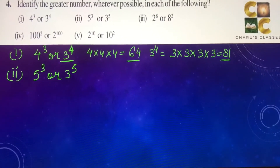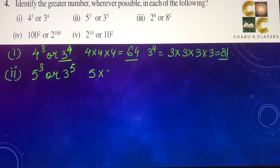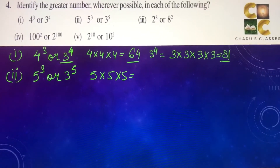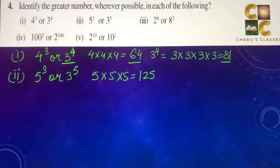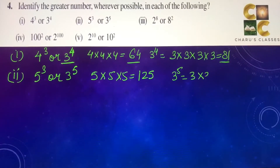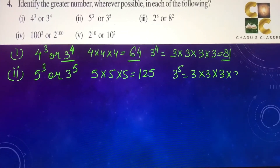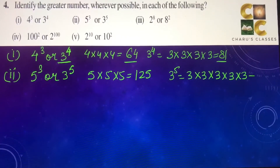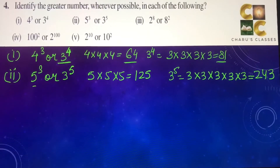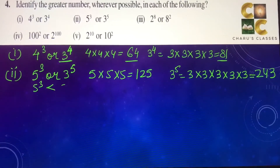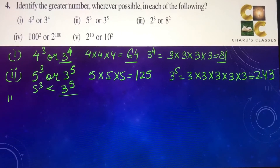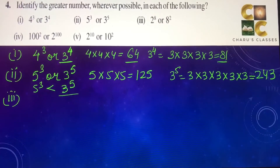Second part: 5 to the power 3 or 3 to the power 5. 5 to the power 3 is 5 into 5 into 5, which is 125. And 3 to the power 5 is 3 multiplied 5 times, giving 243. So 5 to the power 3 is less than 3 to the power 5 — 3 to the power 5 is the bigger one.